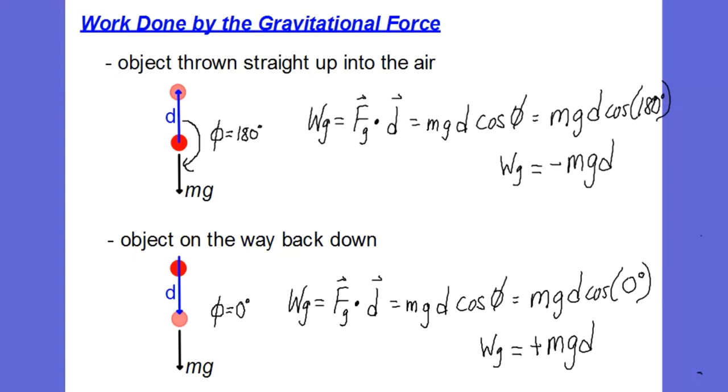Let's take the example of throwing an object up into the air. Our first diagram here shows as it's traveling up into the air, the displacement is upward and the weight or the force of gravity is downward, so those are in exactly opposite directions. So the angle between those two vectors is what we call the angle phi and it's going to be 180 degrees.